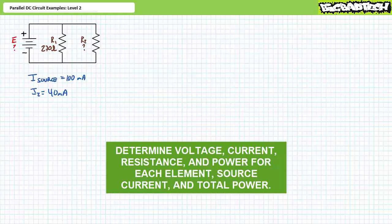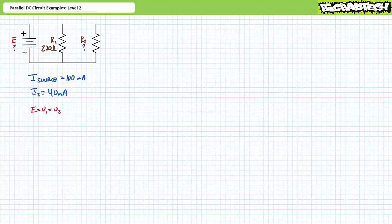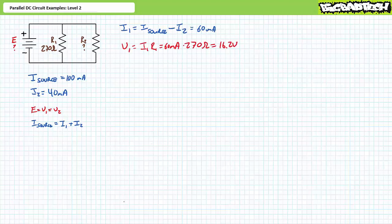If you're tracking, you should have obtained the following results. Voltage across elements in parallel is the same; for this circuit, E equals V1 equals V2. A Kirchhoff's current law analysis demonstrates that source current splits into two paths, I1 and I2, giving the equation I_source equals I1 plus I2. Solving for I1 algebraically shows I1 is the remaining 60 milliamps. Applying Ohm's law demonstrates V1 is 16.2 volts, and since voltage across parallel elements is the same, E equals V1 equals V2 equals 16.2 volts.